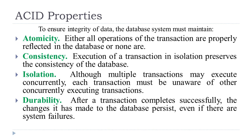The third property, isolation, is about allowing many transactions to execute simultaneously, but each one must be given the feel that it is executing alone — that there are no other transactions going on at that moment. Each transaction must be unaware of the other concurrently executing transactions. The last property is durability: after the transaction completes successfully, whatever changes we have made to the data items must persist in the database, even if failures happen.